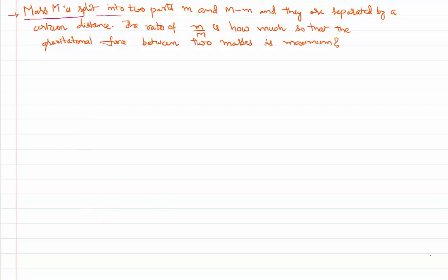A mass M is split into two parts as m and M minus m. They are separated by a certain distance. What shall be the ratio of these two masses so that the force between them is maximum?